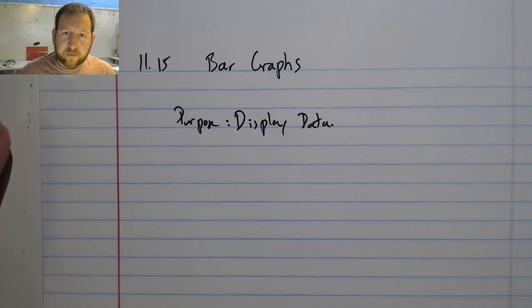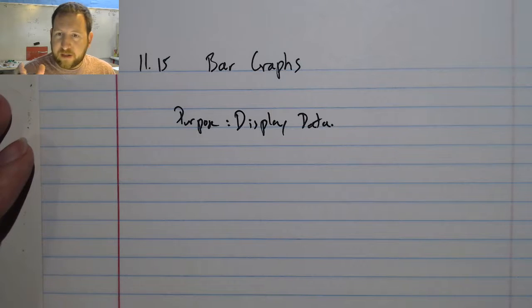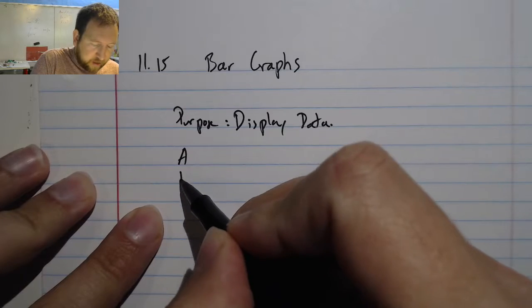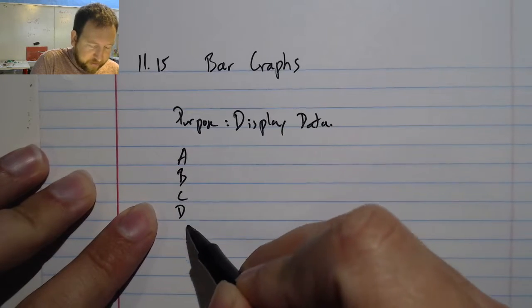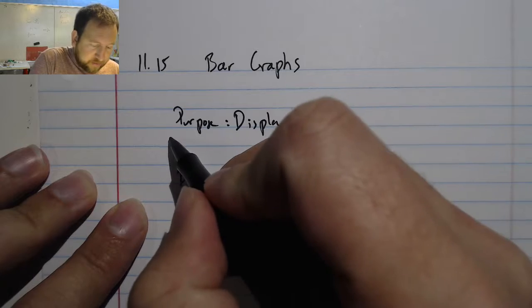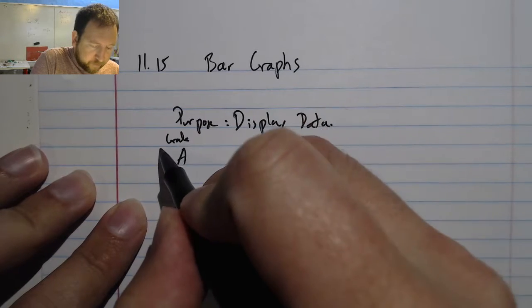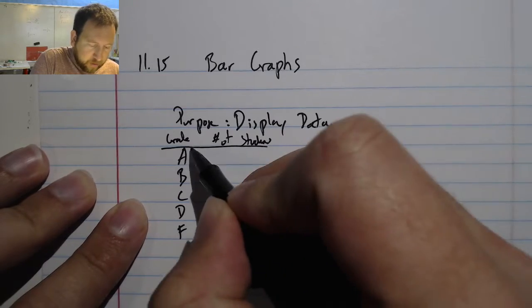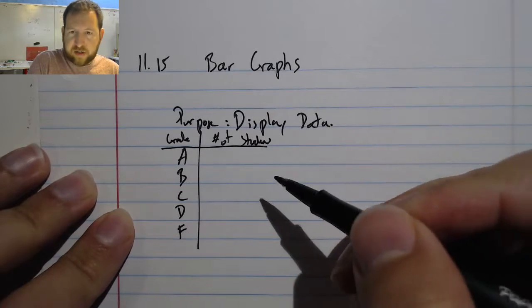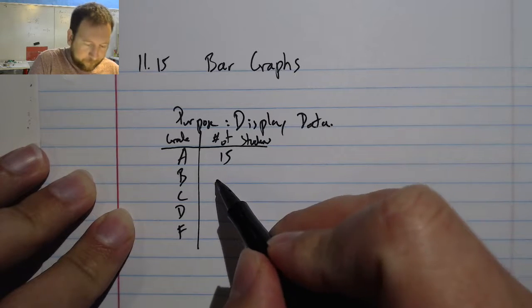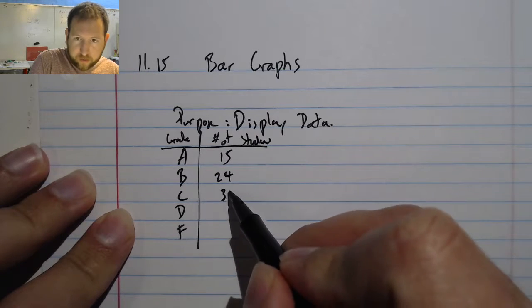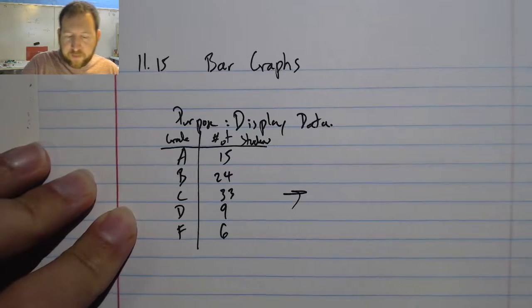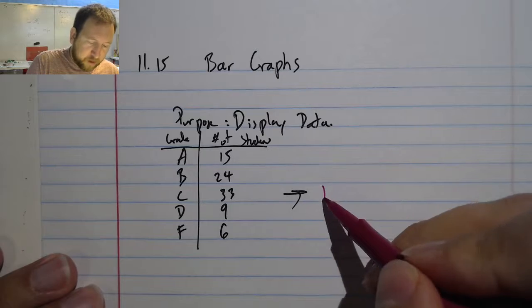Let's draw a quick bar graph and we're going to be using this made up teacher's English grades. Some get an A, a B, C, D, and an F. And this is the grade. And this is the number of students that earned that. This is a little t-chart that we can make. 15, 24, 33, 9, and 6. And what we'd like to do is I'd like to turn this into a bar graph.